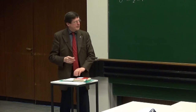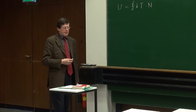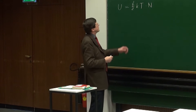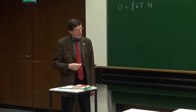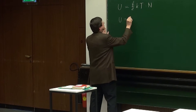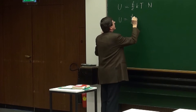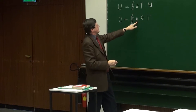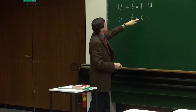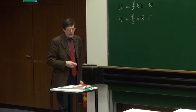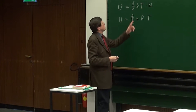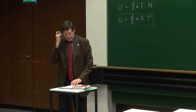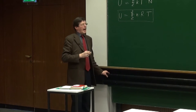Deshalb kommen wir auf die Möglichkeit, die Wärmekapazität zu berechnen. Wir formen das so um, dass wir mit der Avogadro-Konstante N_A multiplizieren und wieder dividieren. Dann erhalten wir die innere Energie in der Form U = F/2 · N · R · T, wobei N jetzt die Anzahl der Mole ist und R die allgemeine Gaskonstante – also N_A mal k. Das ist die Beziehung für die innere Energie von idealen Gasen.